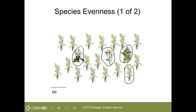Now getting on to species evenness — this tells the relative abundance of a species compared to another species. For instance, if I label these as species A, species B, species C, and species D, let's count together to determine species evenness. For species A, there is only one individual. B, there is only one individual. For C, also only one individual.